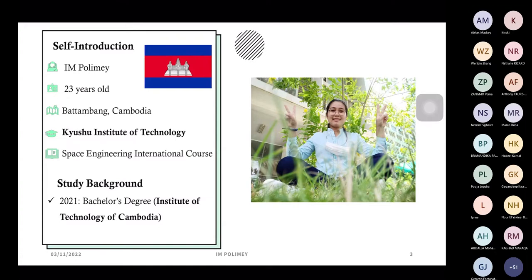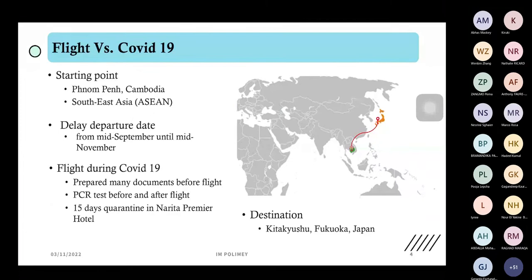Let's talk about flying during COVID. My starting point was Phnom Penh International Airport in Cambodia, a country in Southeast Asia. During COVID-19, I had a delay for departure from mid-September until mid-November. Flying during COVID was very difficult — I had to prepare many documents before the flight, do a PCR test before and after the flight, and I had a 15-day quarantine in a Narita hotel. After that, I started flying again from Tokyo to Kitakyushu Airport in Fukuoka, Japan.